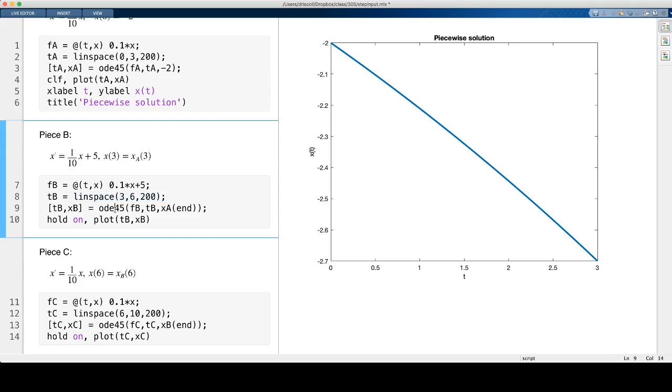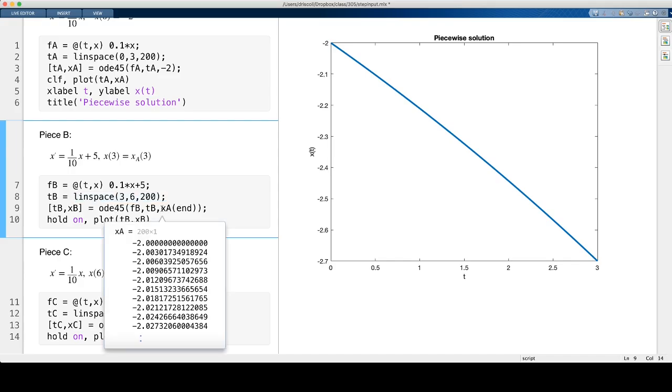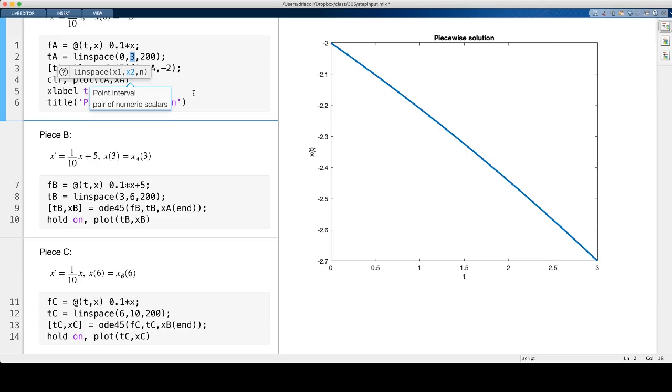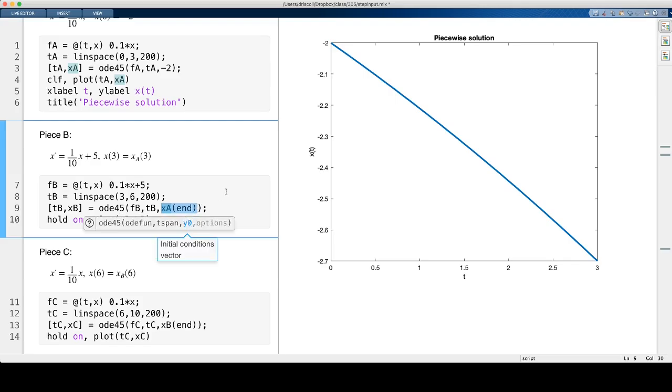And then specifying the initial value for this segment is a little bit tricky because mathematically what I want is the value of the solution xa at the time t equals 3. And if we were writing that on paper, we would write xa parentheses 3. But in this program, that would be the third element of a vector xa. That's not what I want because that would be some early time close to 0. Instead, what I want is the value of the solution that corresponds to t equals 3, which is at the very end of the vector. That was the very last thing we asked for in the first part. So here is the syntax for getting the last element of that solution vector from the previous segment.